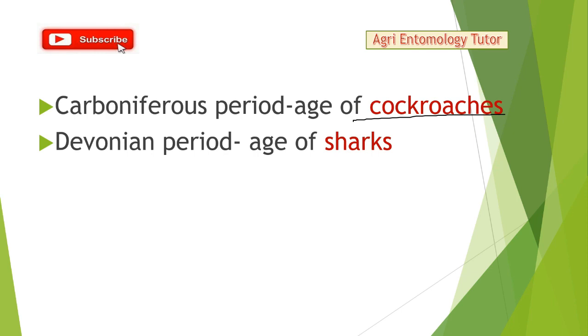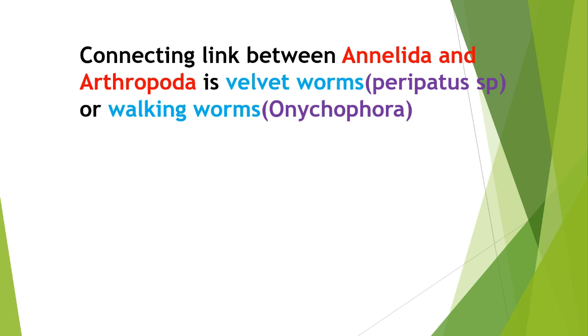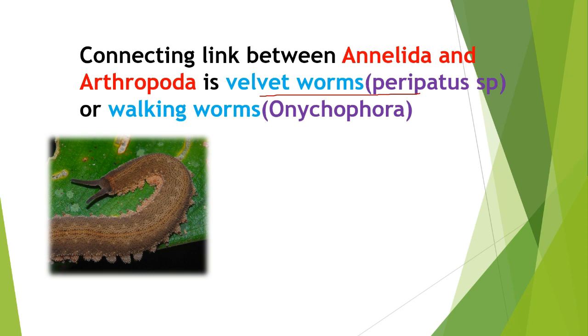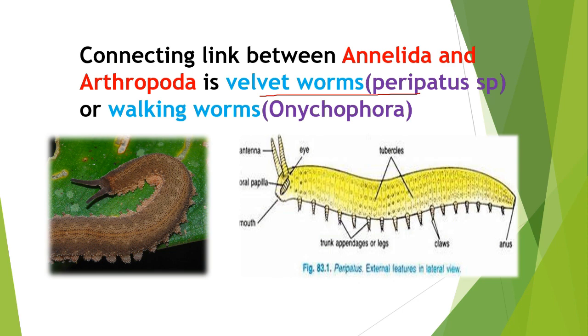The Devonian period is called the age of sharks. Another important exam question: what is the connecting link between annelids and arthropods? The answer is velvet worms — Peripatus species, also called Onychophora. Here you can see the picture: the body is segmented and consists of trunk appendages (legs) and antennae. This organism acts as the connecting link between annelids and arthropods.